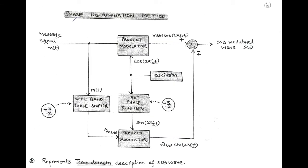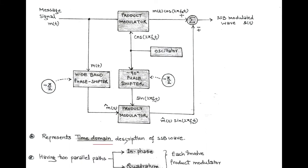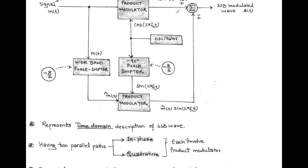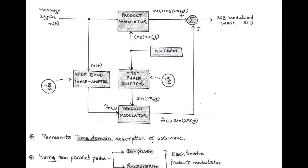The second method for the generation of single sideband is called the phase discrimination method. This method represents the time domain description of the SSB wave. In the phase discrimination method, we have two parallel paths. The upper path is called the in-phase path and the bottom path is called the quadrature path. Each path involves a product modulator, and a sinusoidal carrier is applied to the two product modulators that are in phase quadrature. This is obtained by using a −90° phase shifter.